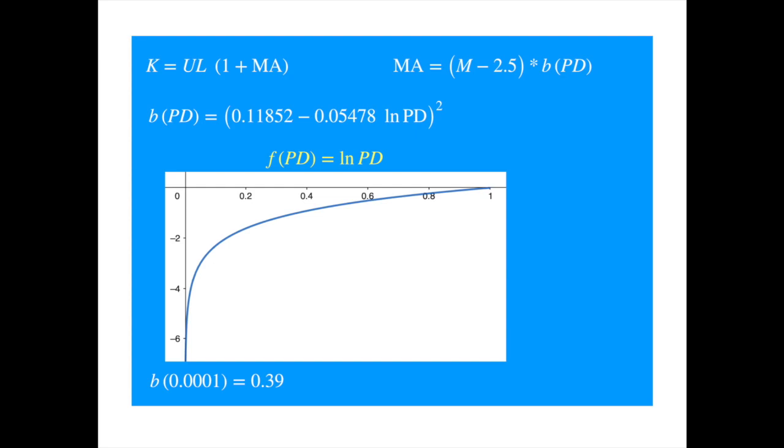If the probability of default is close to 1, then the log of the probability of default will be close to 0. So the second term inside the square will be close to 0, meaning you get square of 0.11852, which comes out to be about 0.014.